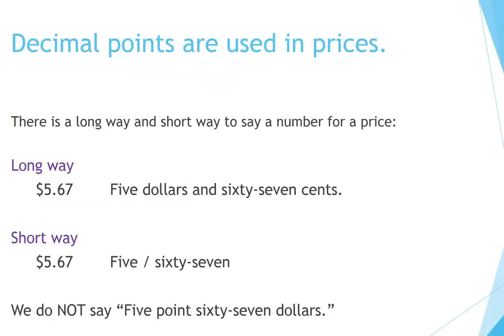Decimal points are used in prices. There is a long way and a short way to say a number for a price. Long way: five dollars and 67 cents. Short way: 5, 67. We do not say '5.67 dollars.'